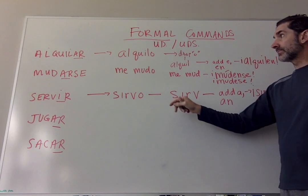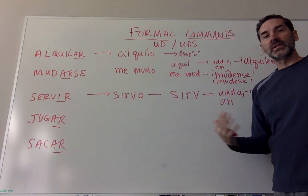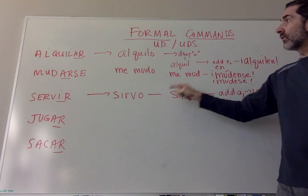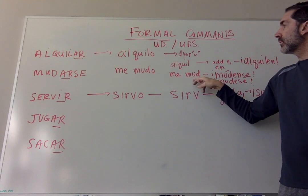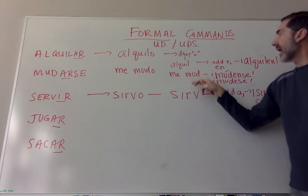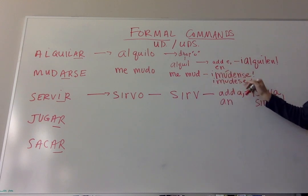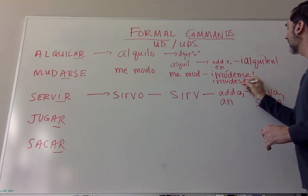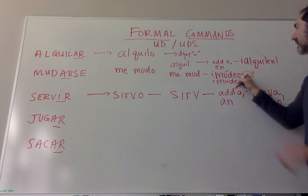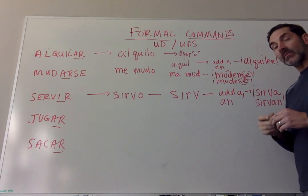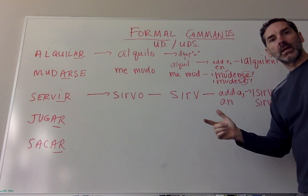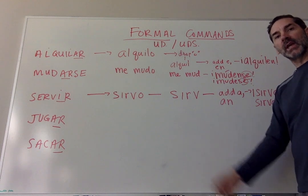Let's try another one: mudarse, 'to move oneself' — physically to move from one location to another. Yo form: me mudo. Drop the O: me mud. Now add opposite endings: mude or muden. And notice what happens with the reflexive pronoun — it's attached to the positive command: múdese or múdense. Múdese usted, múdense ustedes.